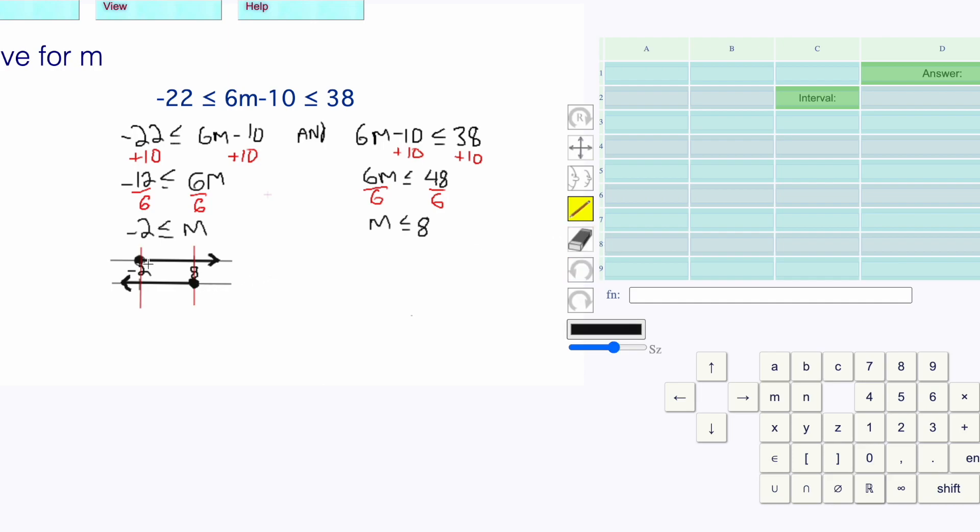And we're intersecting, we're finding what's common. What's common is the 2 is common in both cases, the 8 is common in both cases, and only what's in between them is common. We're shading down here but we're not shading up here. That's not common. We're taking the intersection.